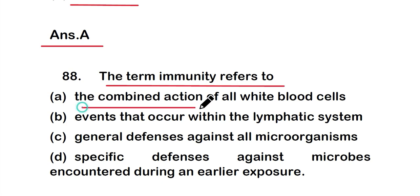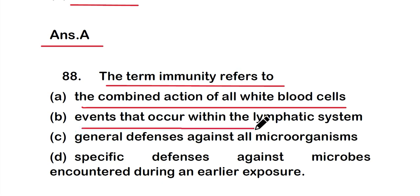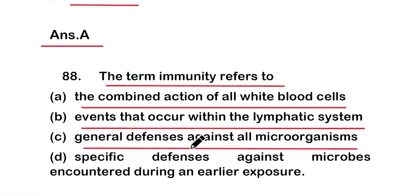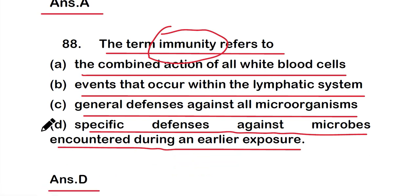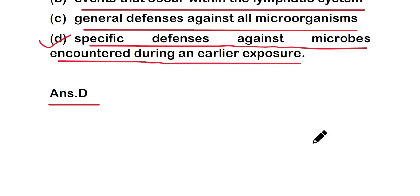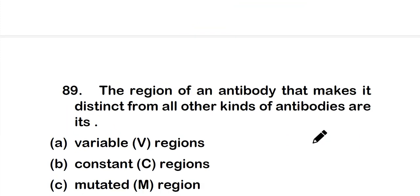Question number 88: The term immunity refers to — option A: the combined action of all white blood cells, option B: events that occur within the lymphatic system, option C: general defense against all microorganisms, or option D: specific defense against microbes encountered during an earlier exposure. The right answer is option D.